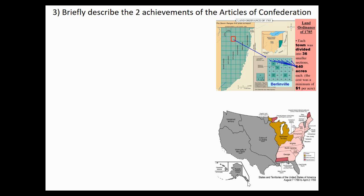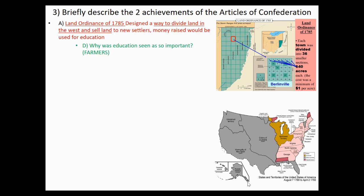The Articles of Confederation was replaced by the Constitution, but two achievements stand out. Number one is the Land Ordinance of 1785, designed as a way to divide land in the Ohio Valley — the Northwest Territory — for new settlers. The money raised would be used for education. When Americans moved out west, there was a way to buy and claim land. Why was education so important, even to farmers who don't need to read to farm? Because a democracy needs an educated electorate — people need to read and make their own decisions. Education was seen as vital not just to career success, but to the political success of a young democracy.